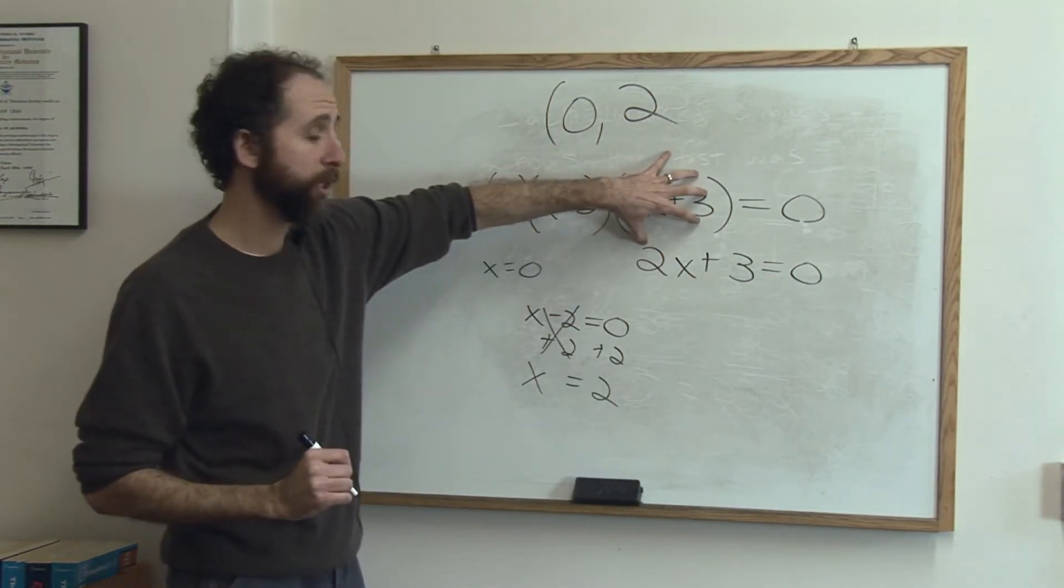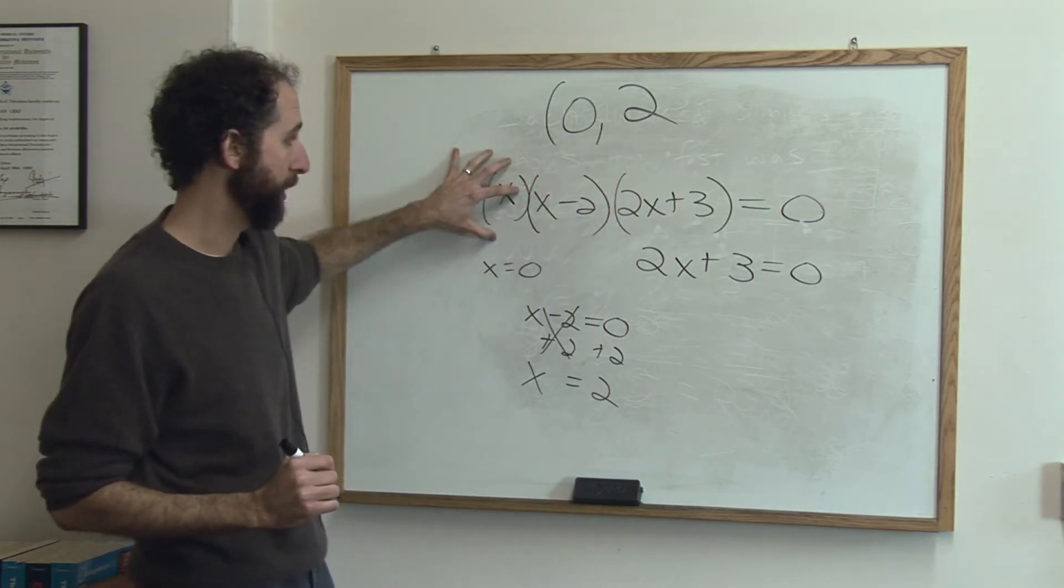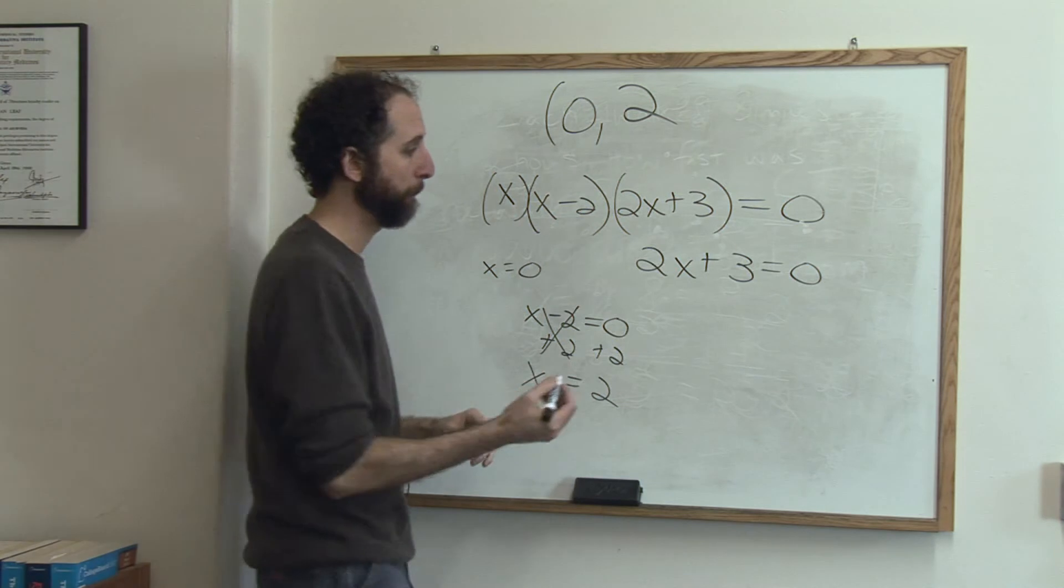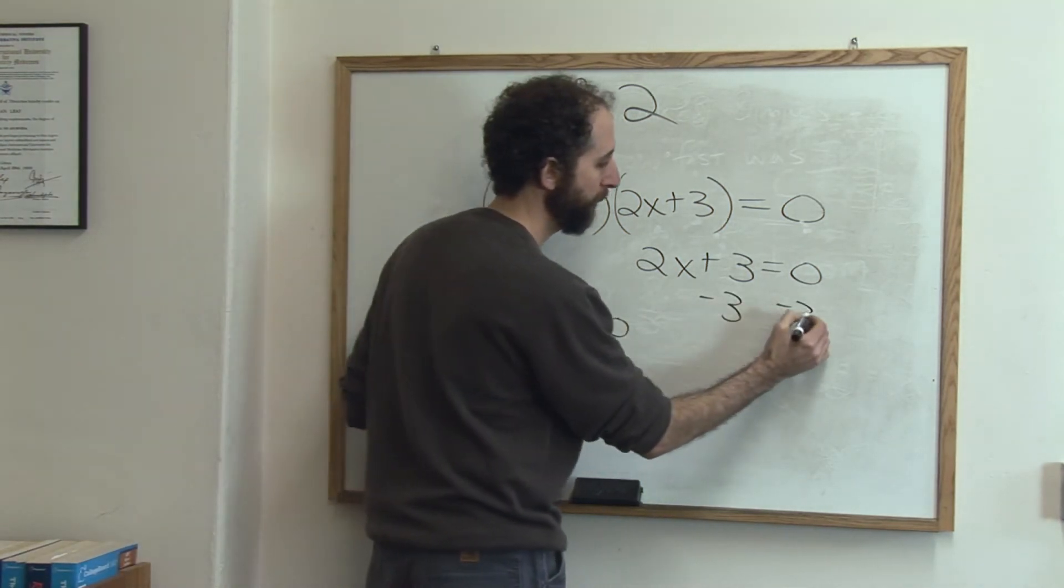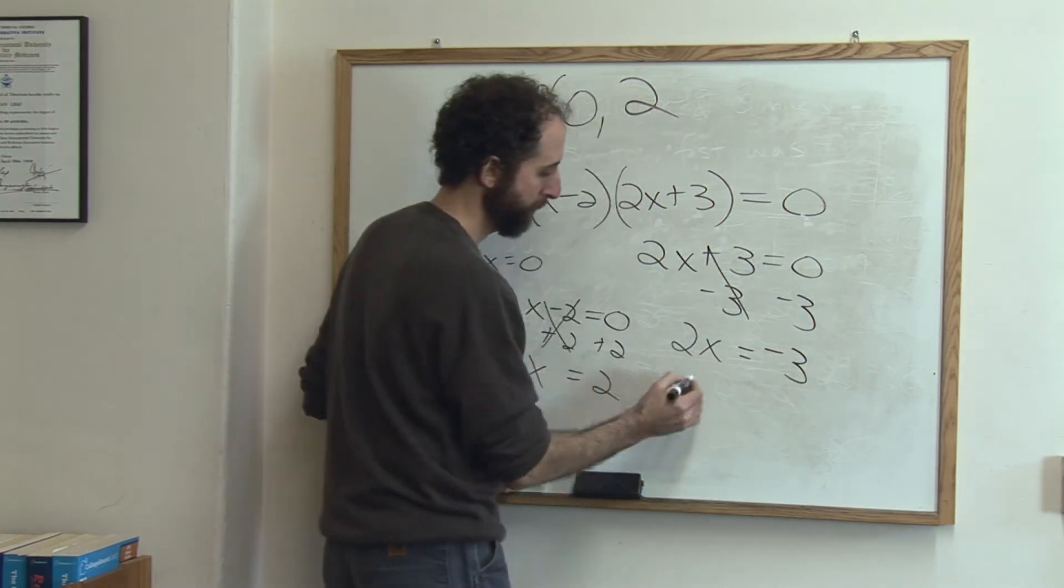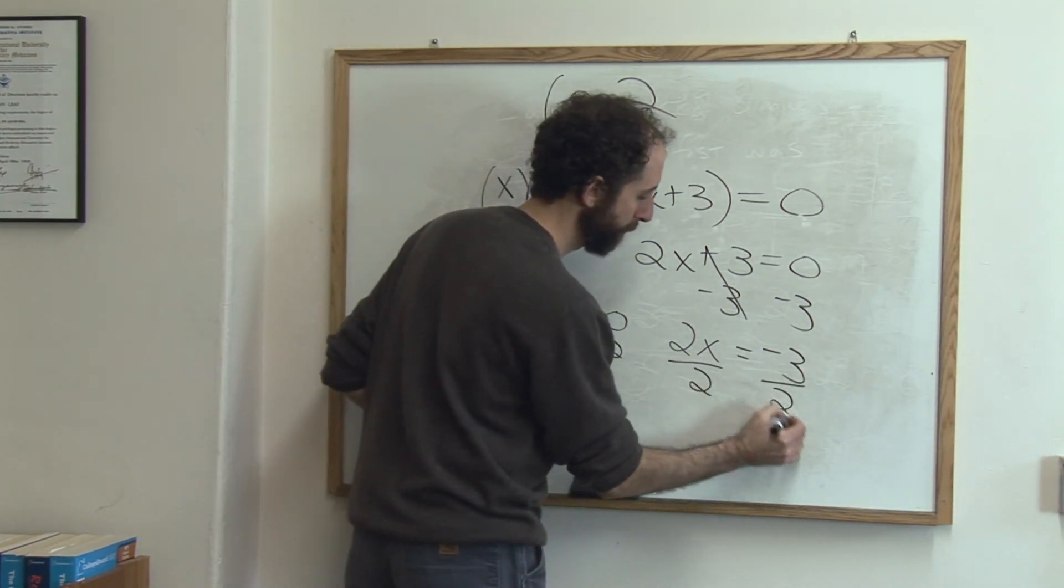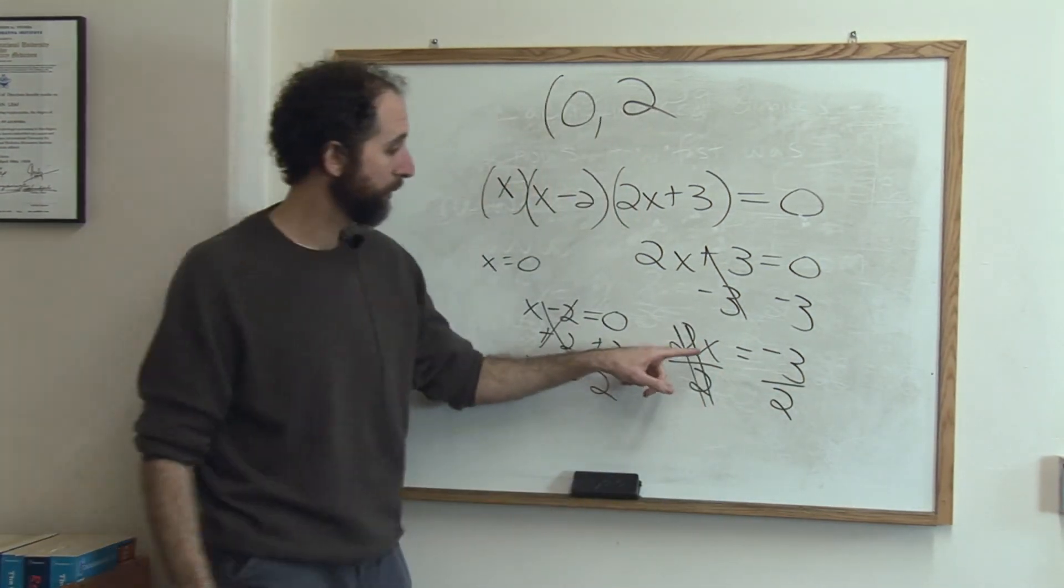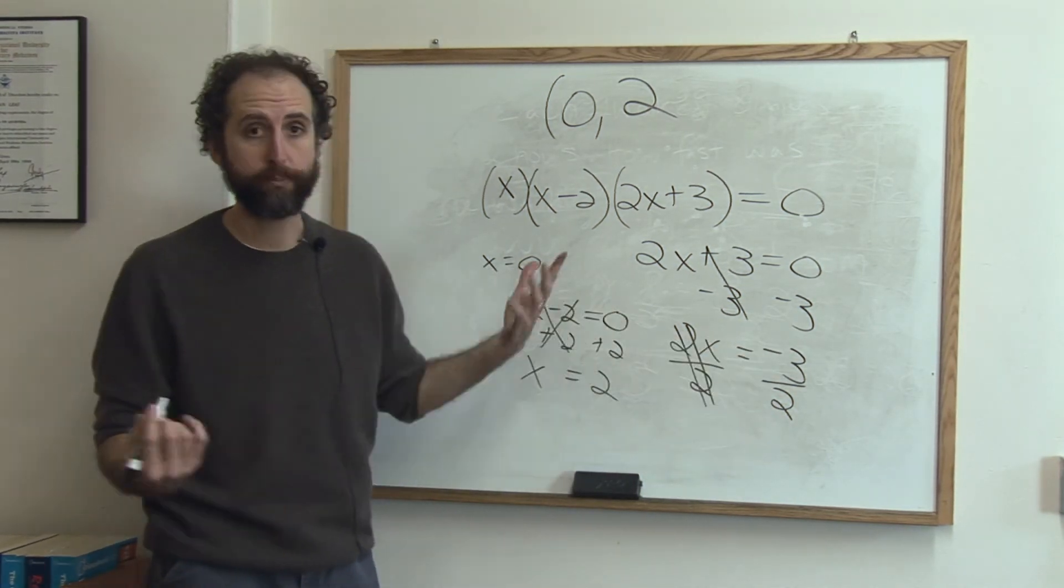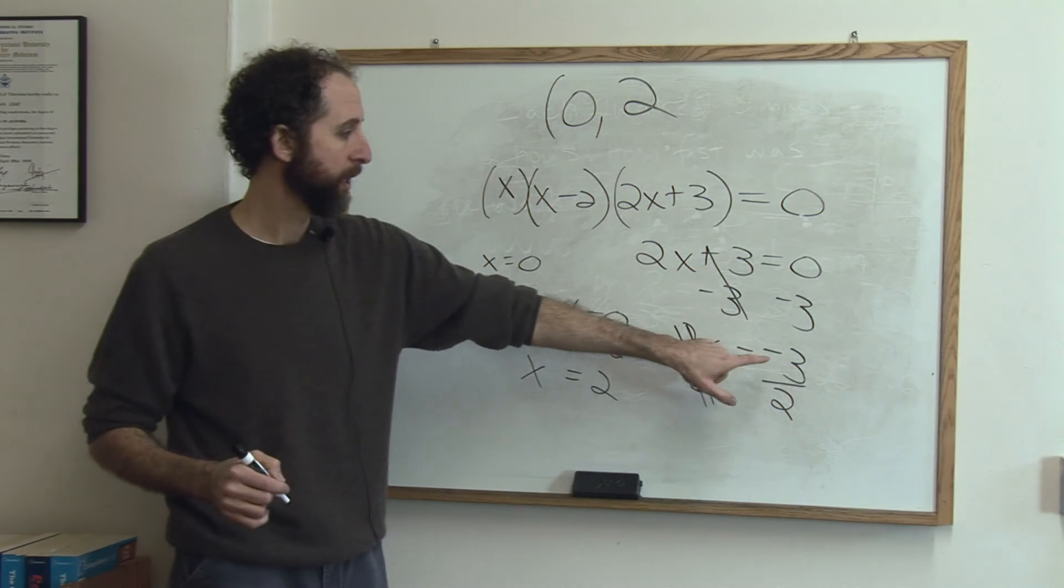Because if this expression equals zero, it doesn't matter what these are. Zero times anything is zero. So let's set this equal to zero. Subtract three from both sides. Two x equals negative three. Divide by two. We get x alone equals negative three halves. Remember to keep the negative sign. That's the most common careless error people make on these, to lose the negative.